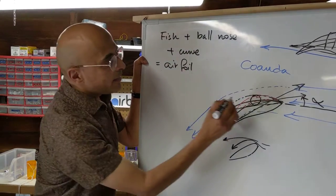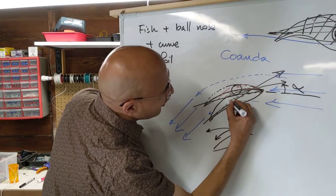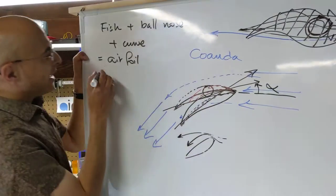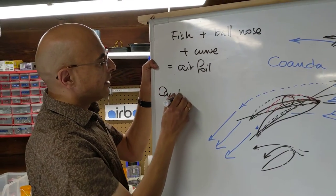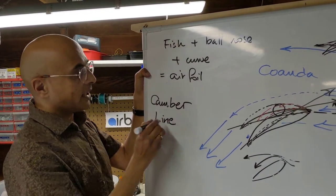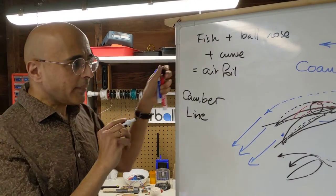And so fish plus ball nose or curved nose plus curved surface equals airfoil. Right? Mm-hmm. And this curve that goes down the middle of the airfoil is known as the camber line of the airfoil. Mm-hmm.